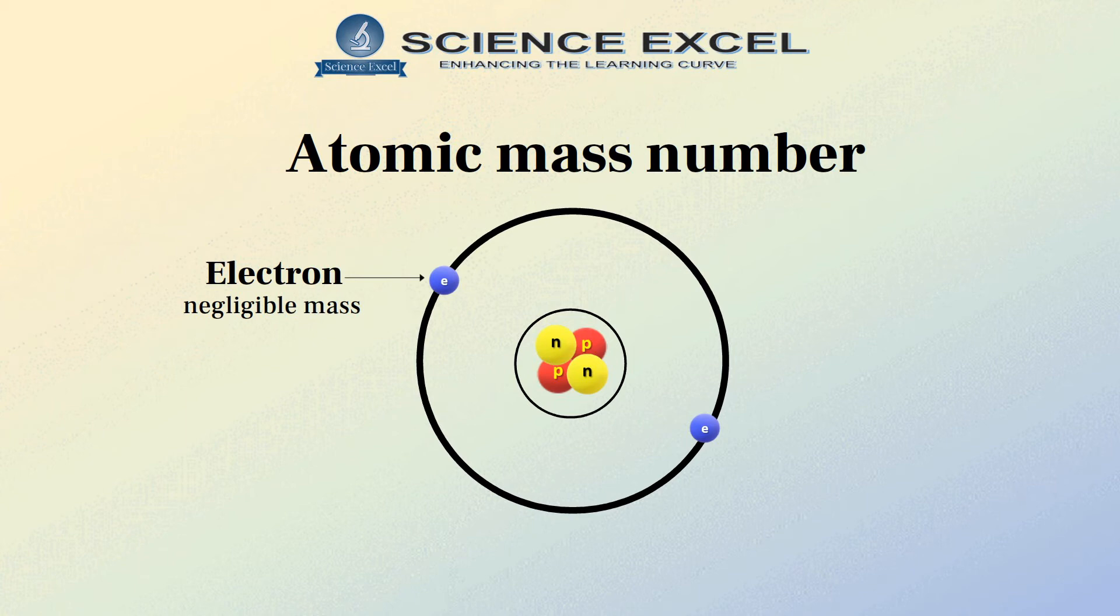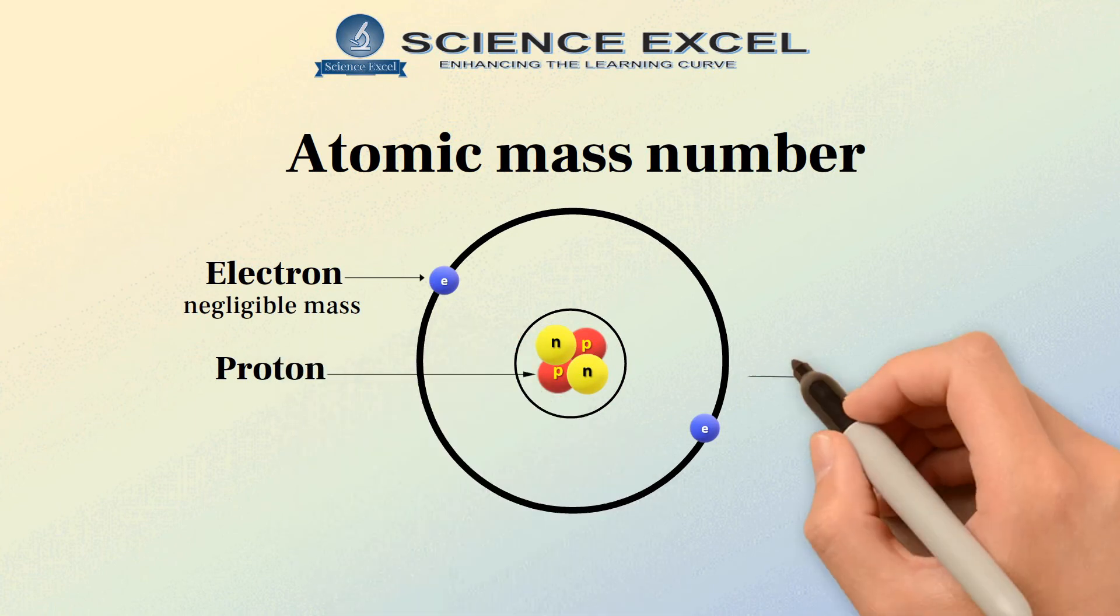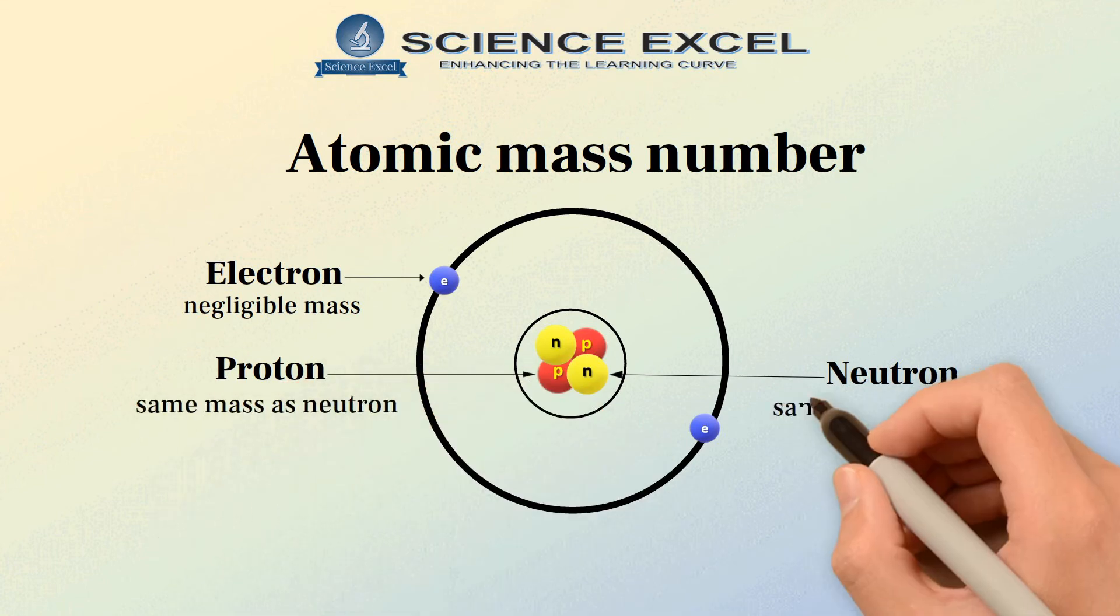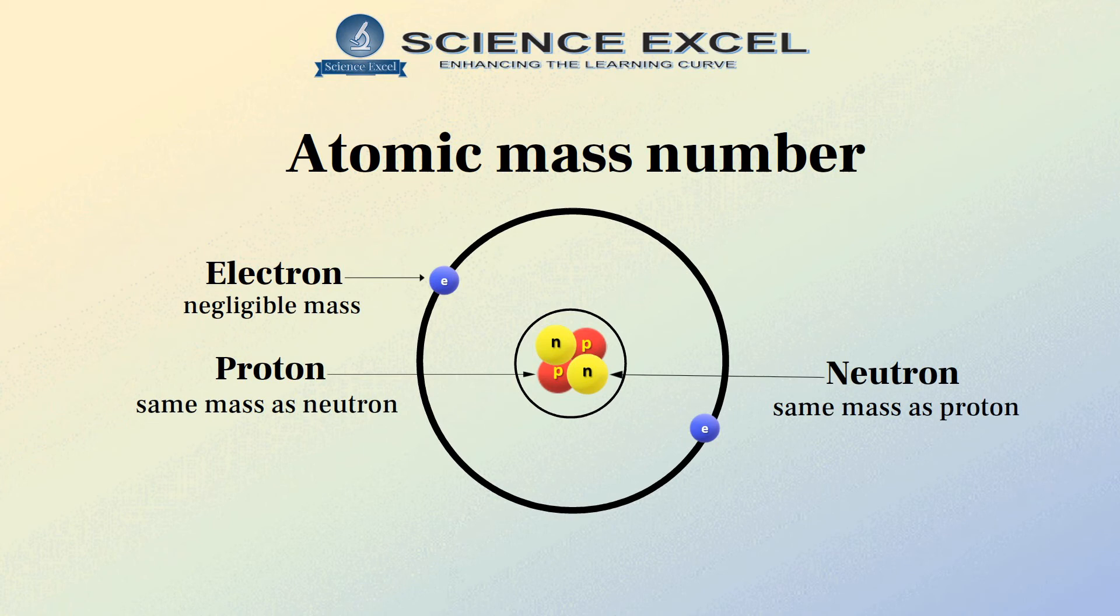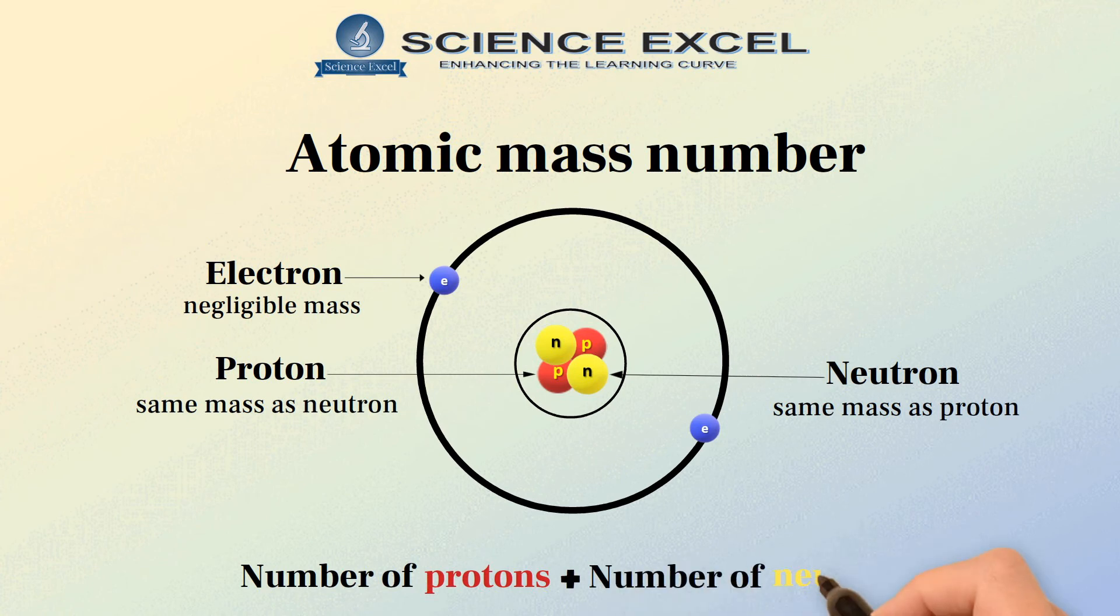So what are we left with? Yes, we have both the protons and the neutrons inside the nucleus. Since a proton and a neutron have the same mass, we can consider them both together. Atomic mass number is defined as the total number of protons and neutrons present in the nucleus of an atom. It can be also called as the nucleons and denoted by the letter A.